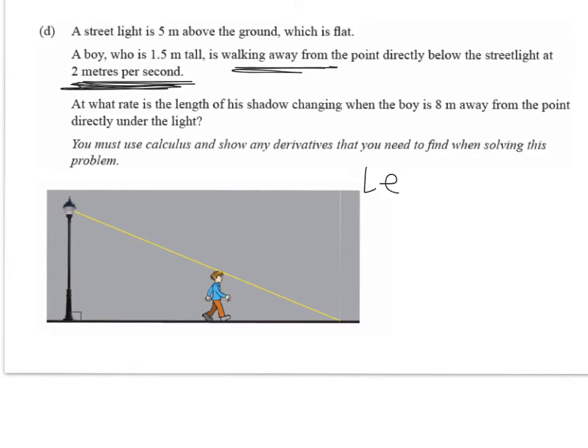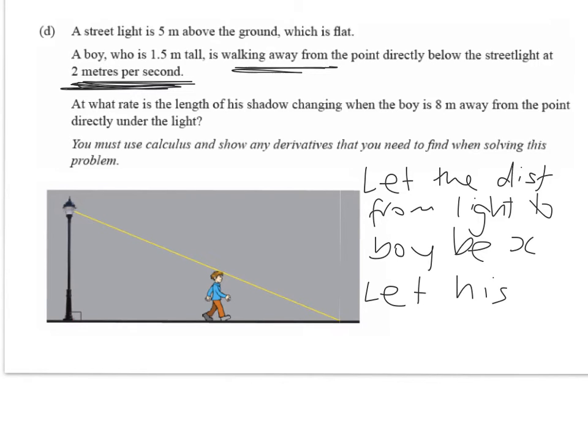So we'll say let the distance from light to boy be x. And then we're going to have a second variable. Let his shadow be... It should really be shadow length. Let his shadow length be L.